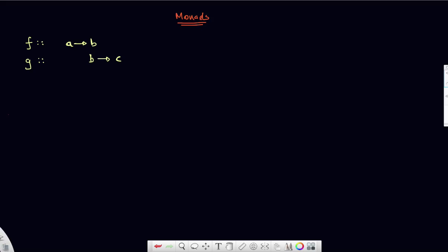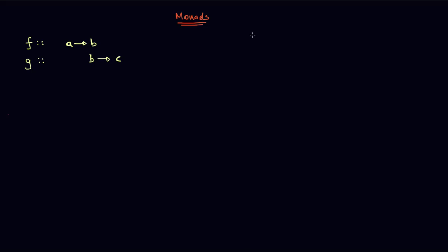I would now like to perform a function composition between these two functions, using the function composition operator, which is the period sign. The type signature for this operator is: it takes in a first function that goes from b to c, and a second function that goes from a to b, and the result is a new function that goes from a to c.